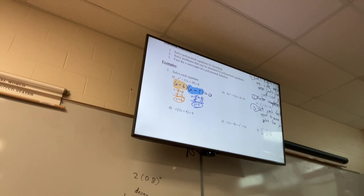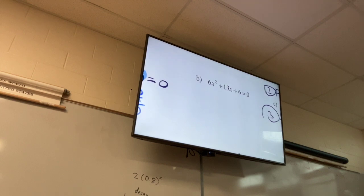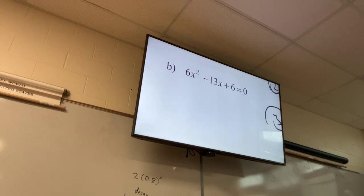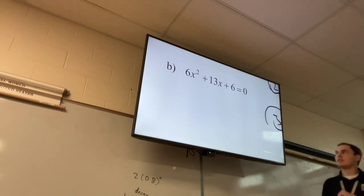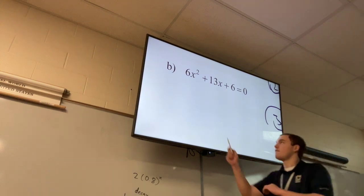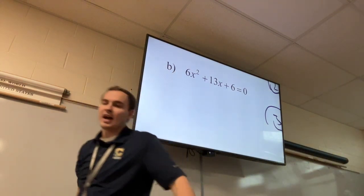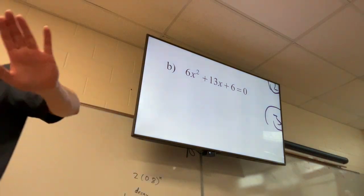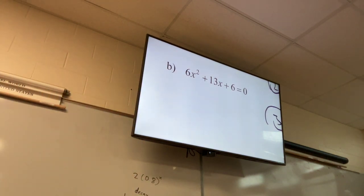Moving on to B. Step one: get everything on one side equal to zero such that the lead coefficient is positive — they already did that for us. So now I need to factor. Let me factor this.